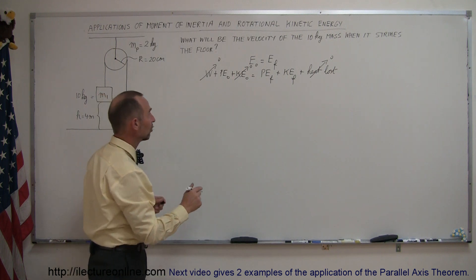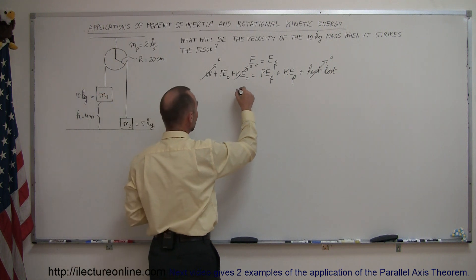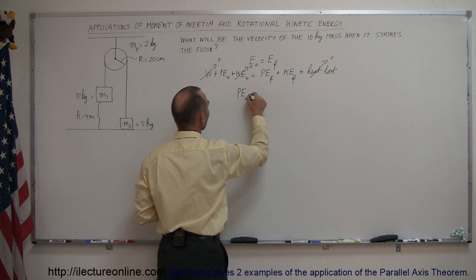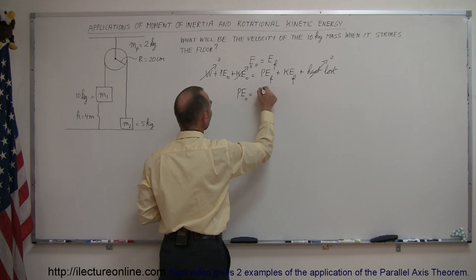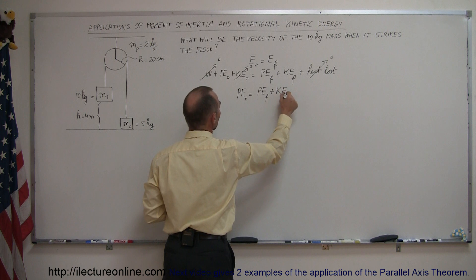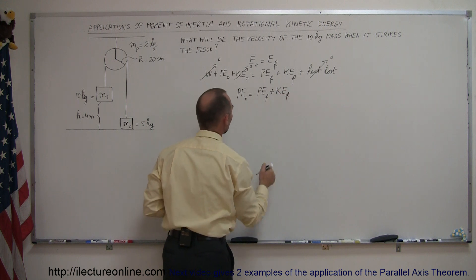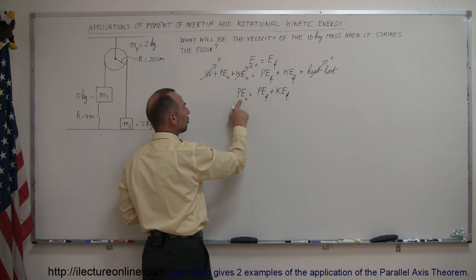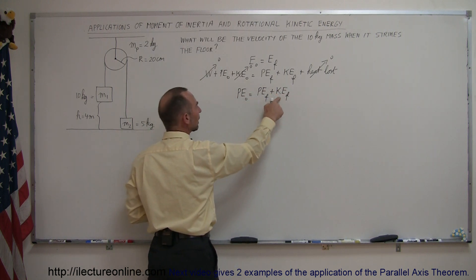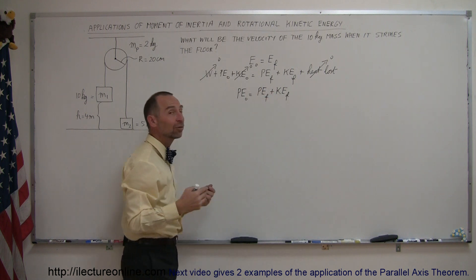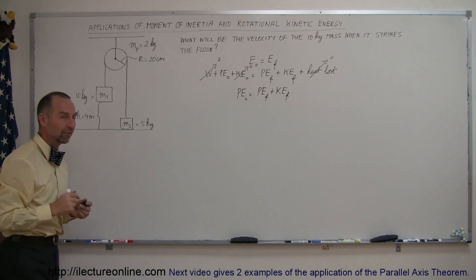What then happens to this equation is that the initial potential energy of the system must equal the final potential energy of the system plus any kinetic energy of the system. So part of its initial potential energy went into kinetic energy, and the remainder stayed as potential energy.